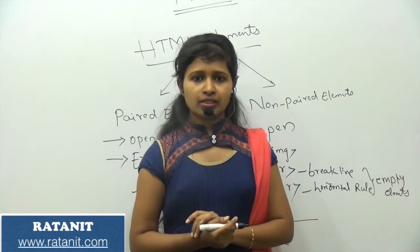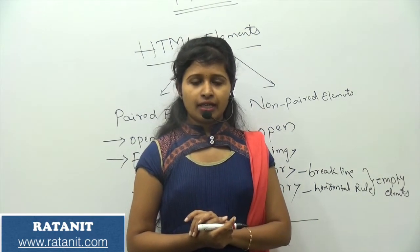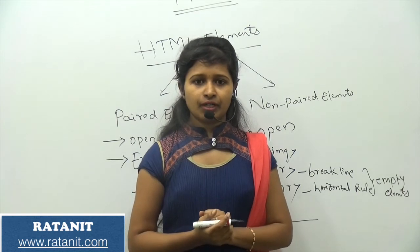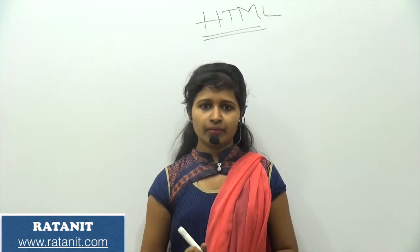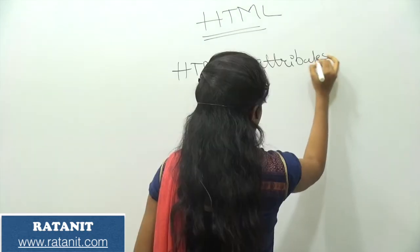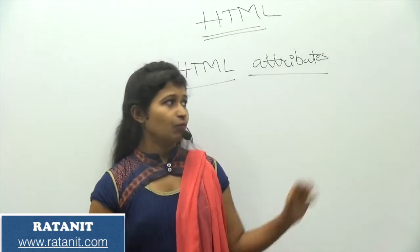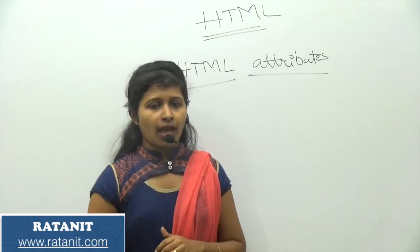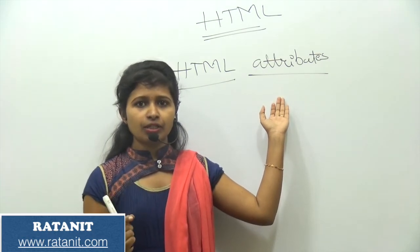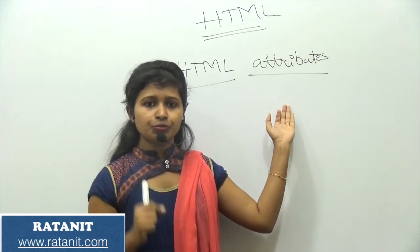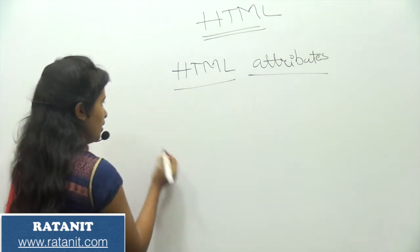Now we are going to the next topic, which is HTML attributes. There are so many attributes and we are going to execute each and every attribute to see how they work. First of all, we need to know what an attribute is. An attribute is a defined thing having a particular usage which is useful for a particular tag.